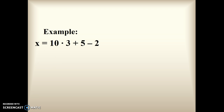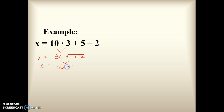Let's do this next problem. We have x equals 10 times 3 plus 5 minus 2. We don't have parentheses or exponents, but we do have multiplication, so we solve that first. 10 times 3 is 30, so x equals 30 plus 5 minus 2. Now we solve addition from left to right: 30 plus 5 equals 35 minus 2, and our answer is 33.